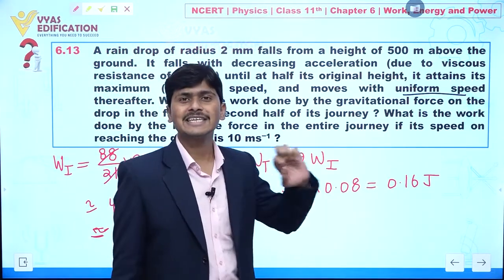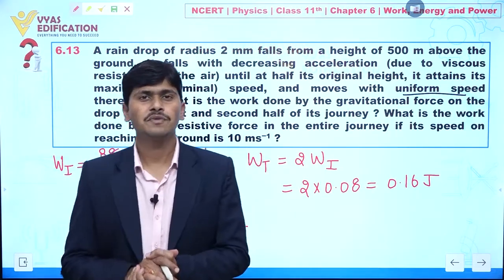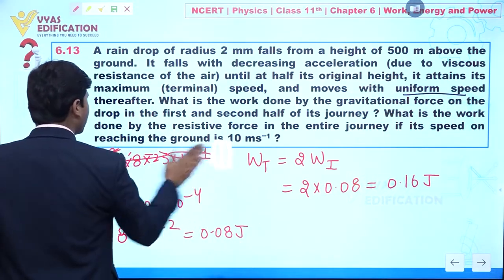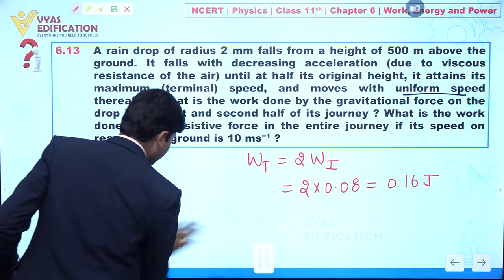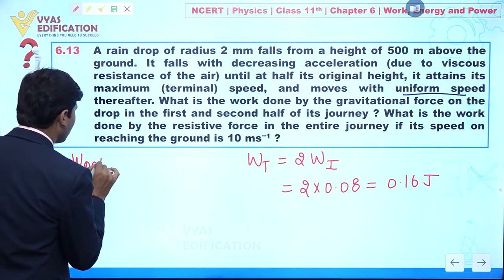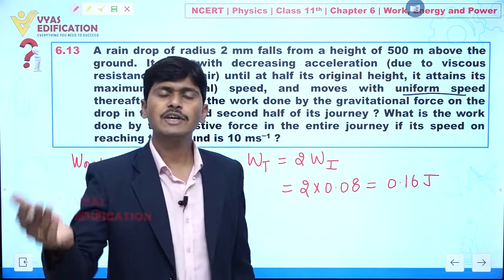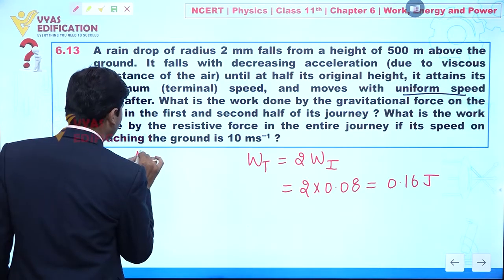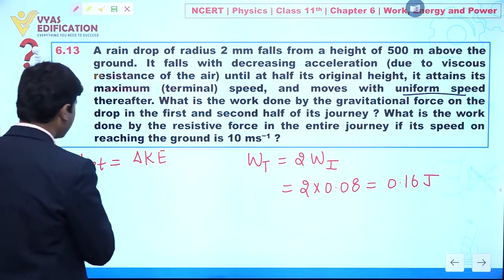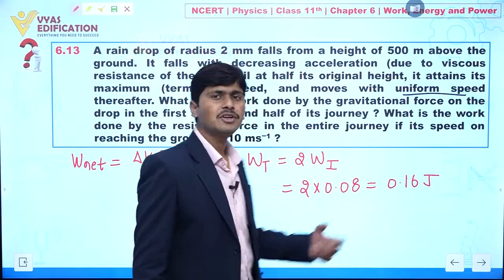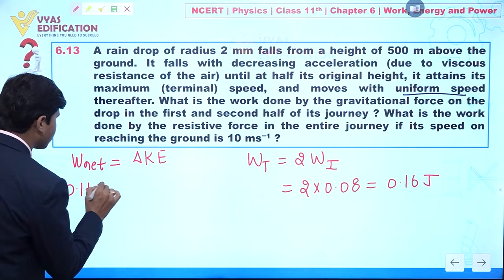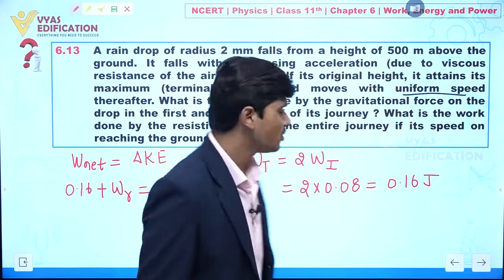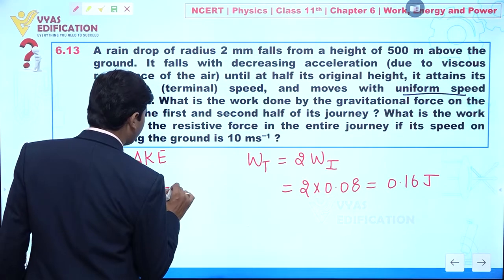Next, we need to find the work done by the resistive force over the entire journey. We apply the work-energy theorem: work done by all forces equals the change in kinetic energy. So W_gravity + W_resistive = ΔKE. We have 0.16 + W_R = (1/2)mv².